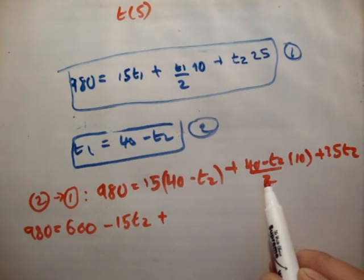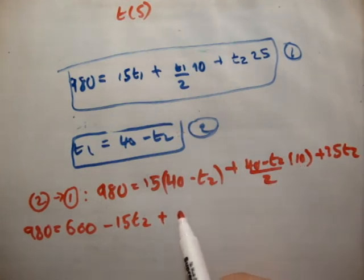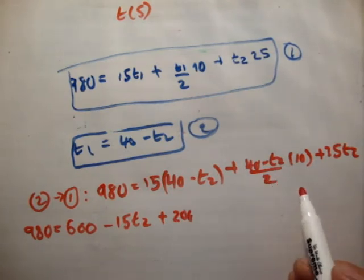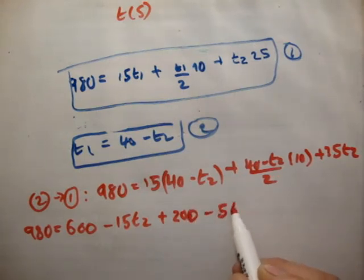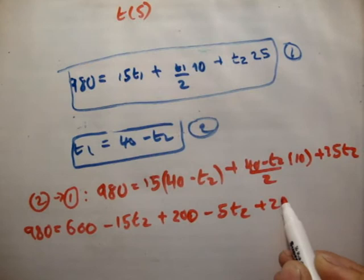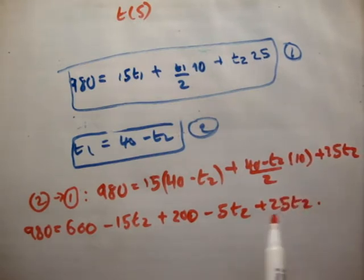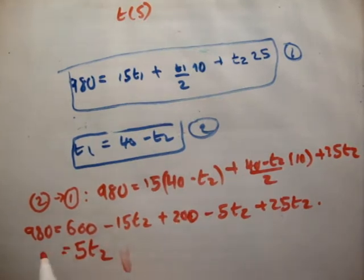40 divided by 2 is 20 times 10, so that's 200. So that's 200 minus, 10 divided by 2 is 5, so 5T2 plus 25T2. So add the T2s together. So 25 minus 5 is 20 minus 15 is 5. So 5T2 is equal to, sorry, 980. And plus 600 plus 200 is 800.